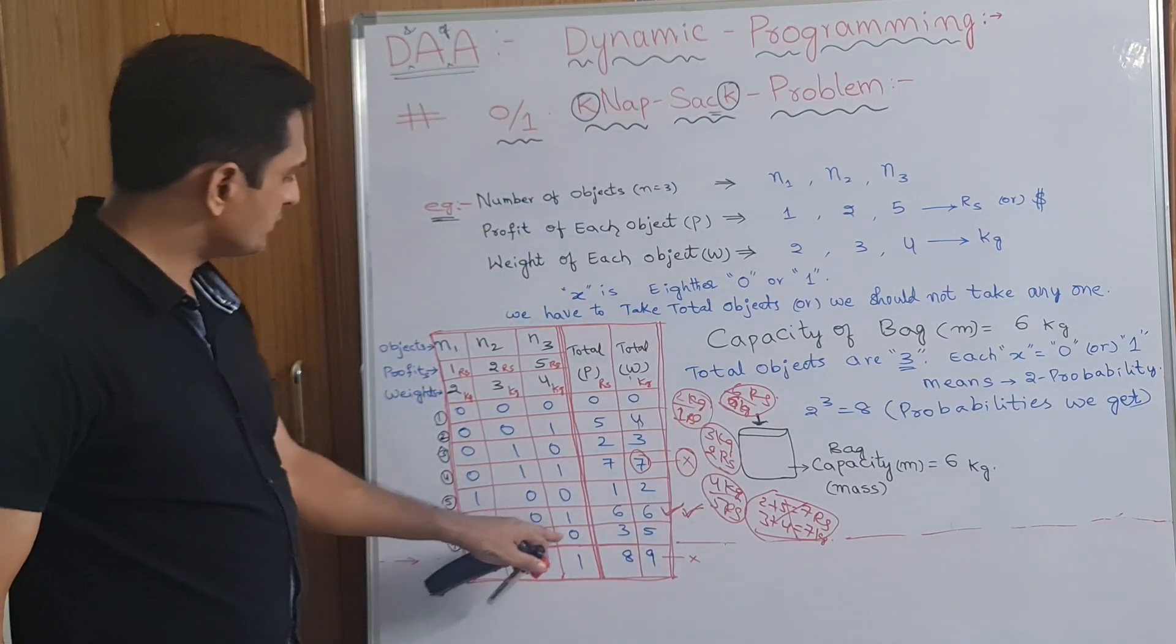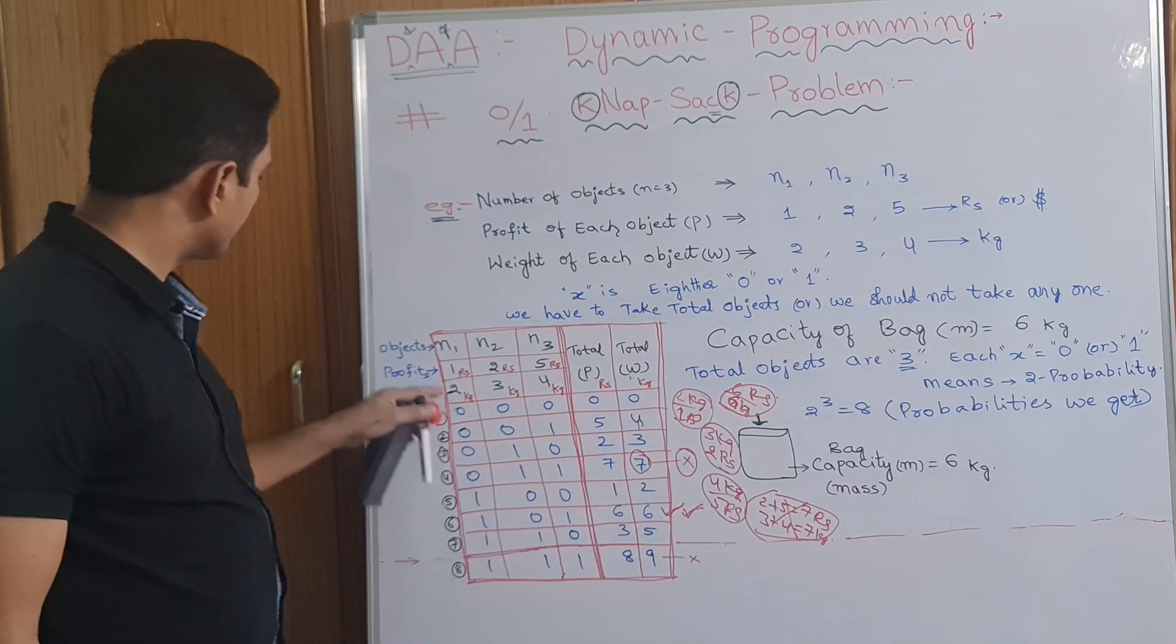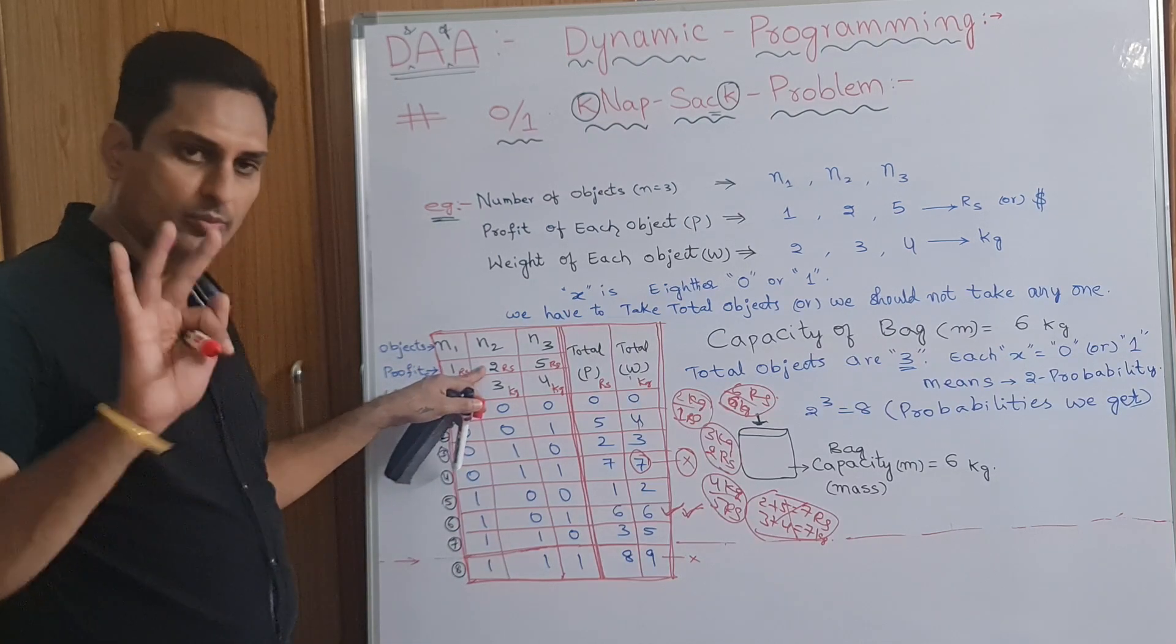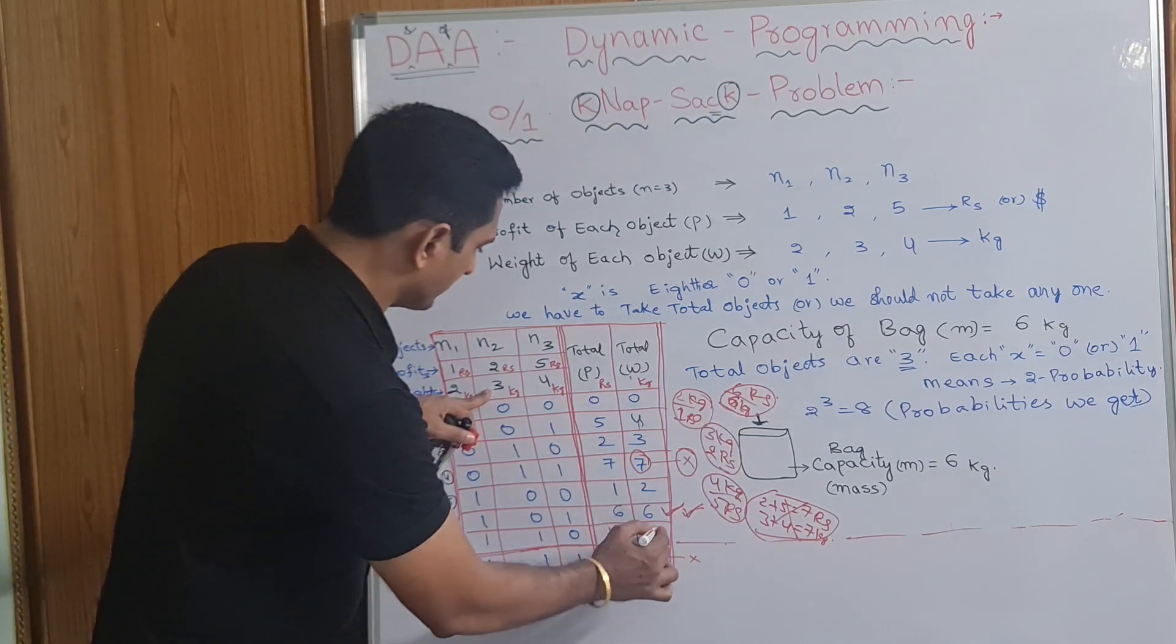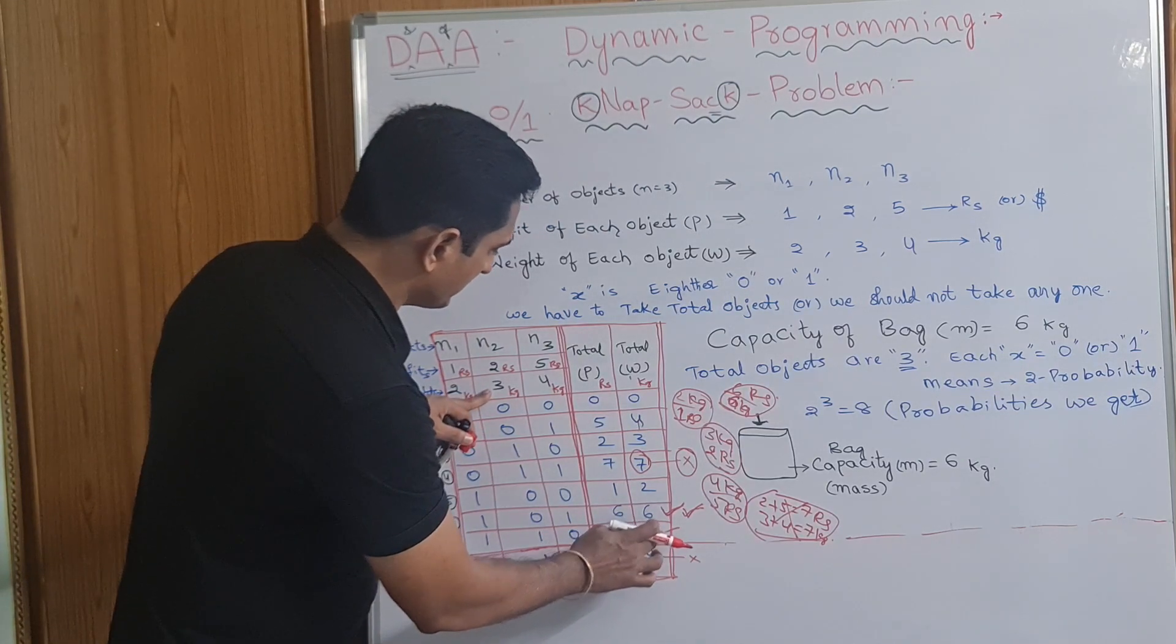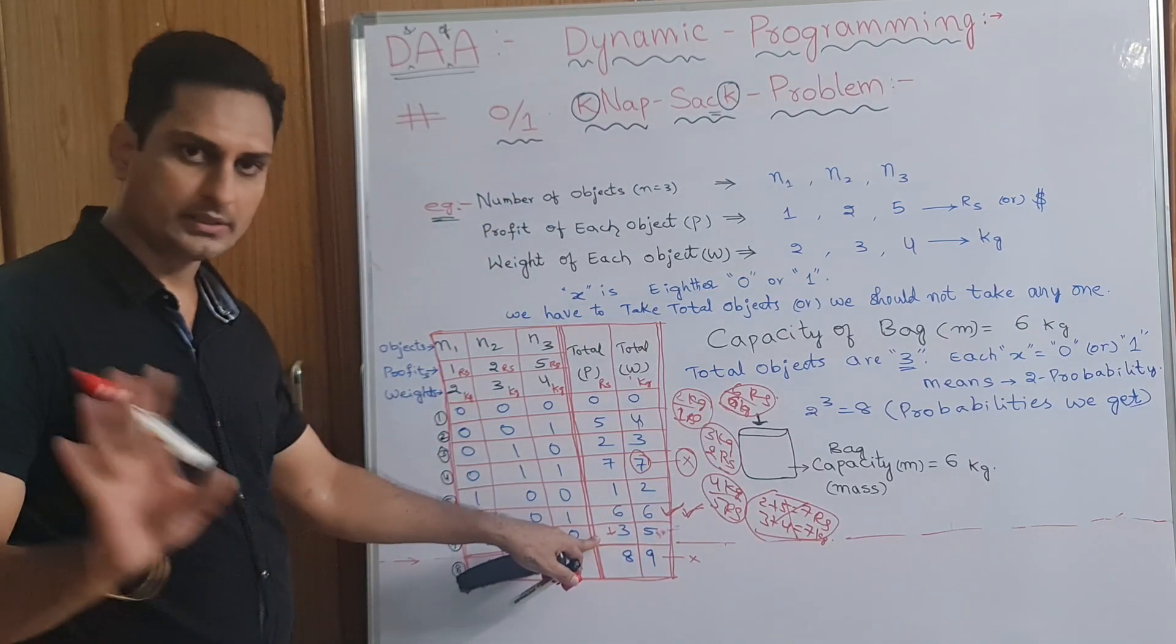Then similarly, 1, 1, 0. 1, 1, 0. Means 1, 1. This 2 we have taken. 1 plus 2, 3 rupees. That is drawn here. And 2 plus 3, 5. 5 kgs of the bag filled. But here we are getting less profit. 3. So, that is not taking.